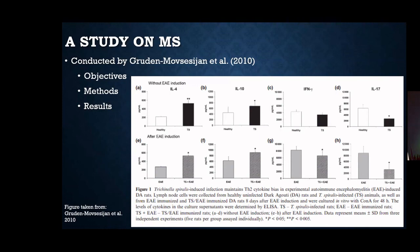The study also found greater cellular infiltration of cells and neurons in the untreated group, but less cellular infiltration in the treated group. The graph shown indicates that certain cell types increase when parasitized, helping promote the fight against inflammation and the effects of autoimmune diseases.